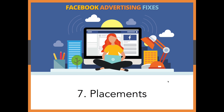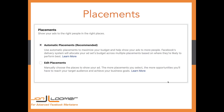The next factor that impacts your Facebook ad success — one you have significant control over — is placements. If you run a campaign without changing anything, by default you'll use automatic placements. Facebook really wants you to go this way; it will allocate your ad set's budget across multiple placements based on where they're likely to perform best.